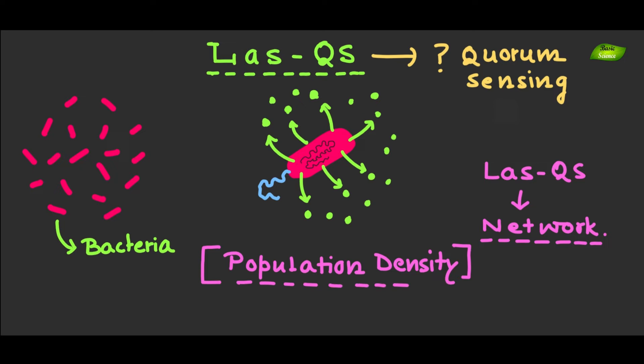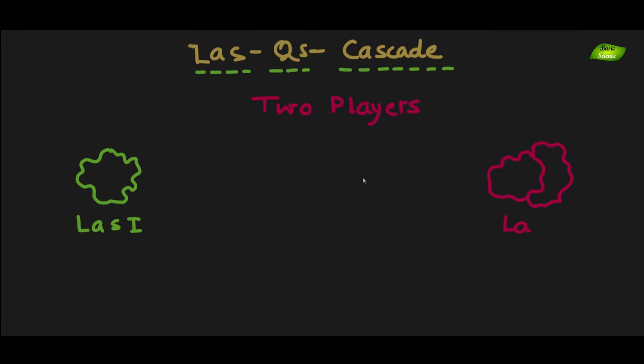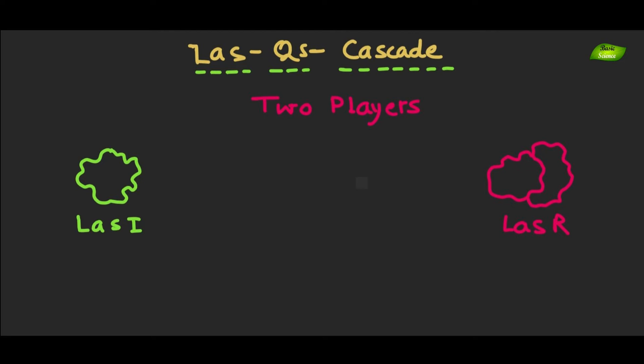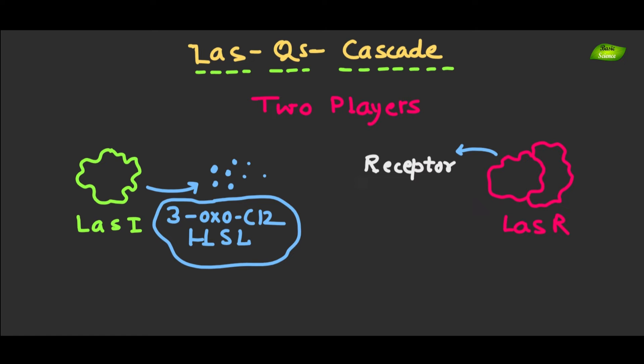Let's break it down. At the heart of the LAS system, there are two key players: LasI and LasR. LasI produces a signaling molecule called 3-oxo-C12-HSL, while LasR acts as the receptor for this molecule. When the bacterial population reaches a certain density, this molecule binds to LasR receptor, triggering a cascade of events.